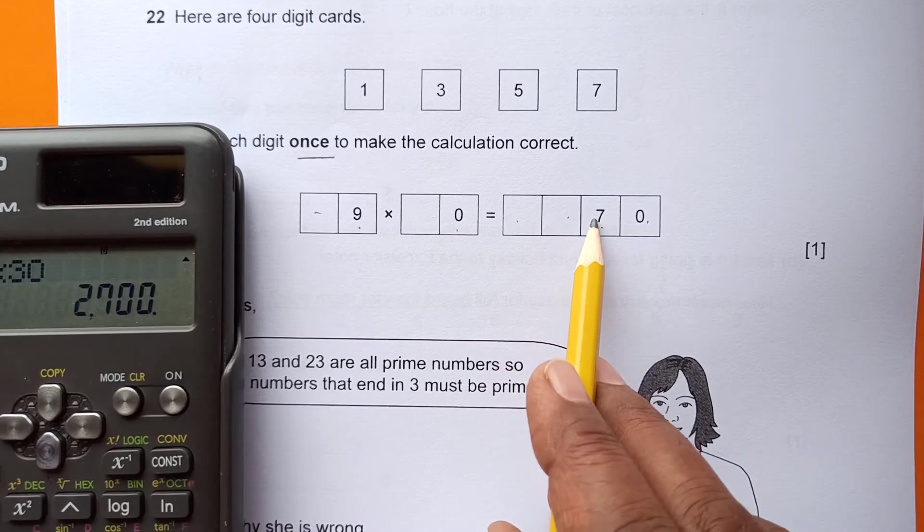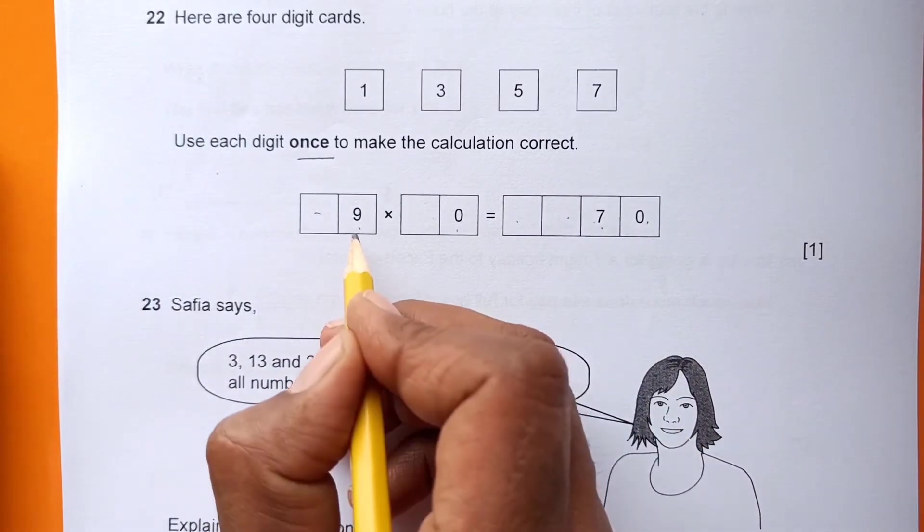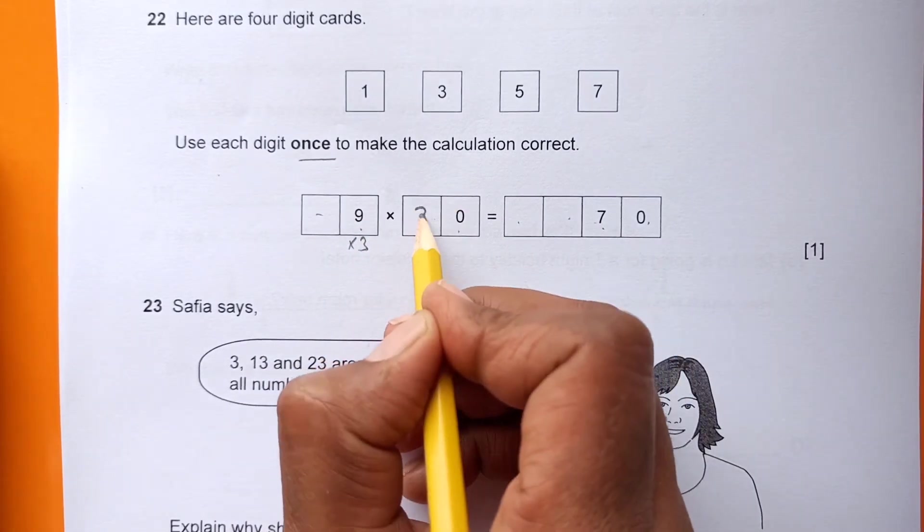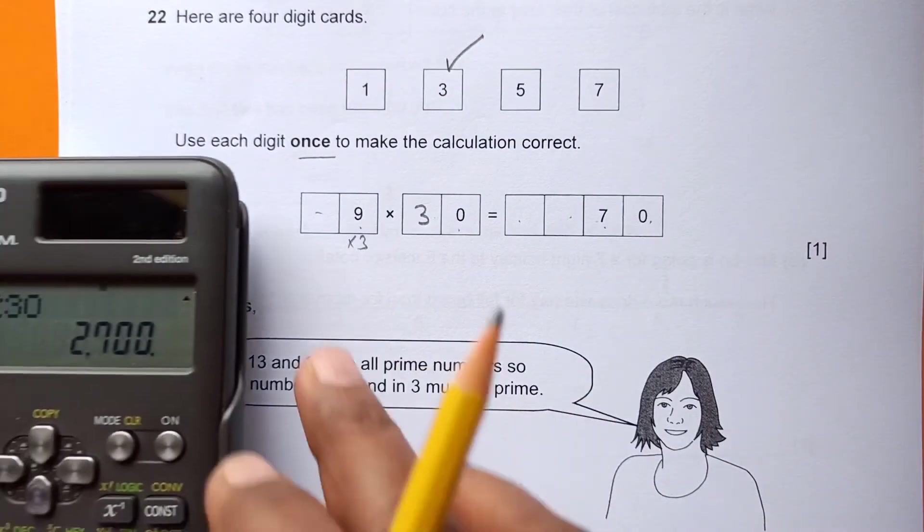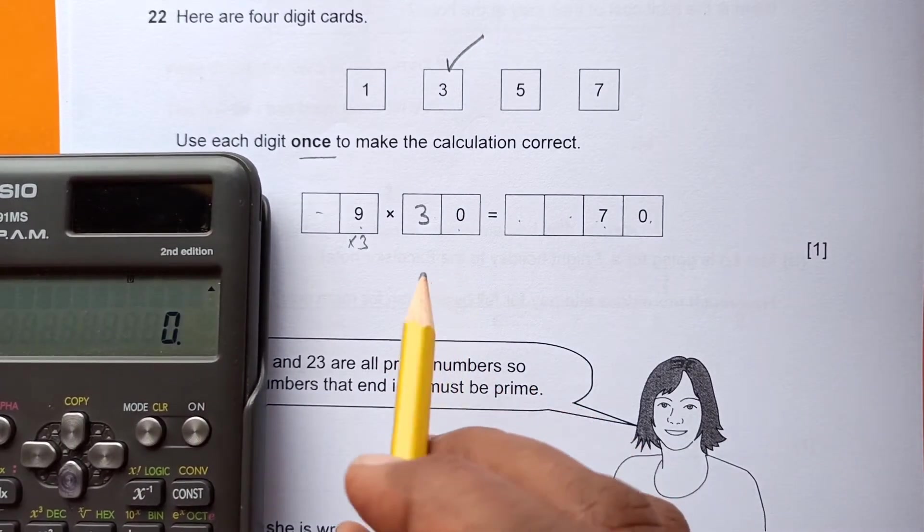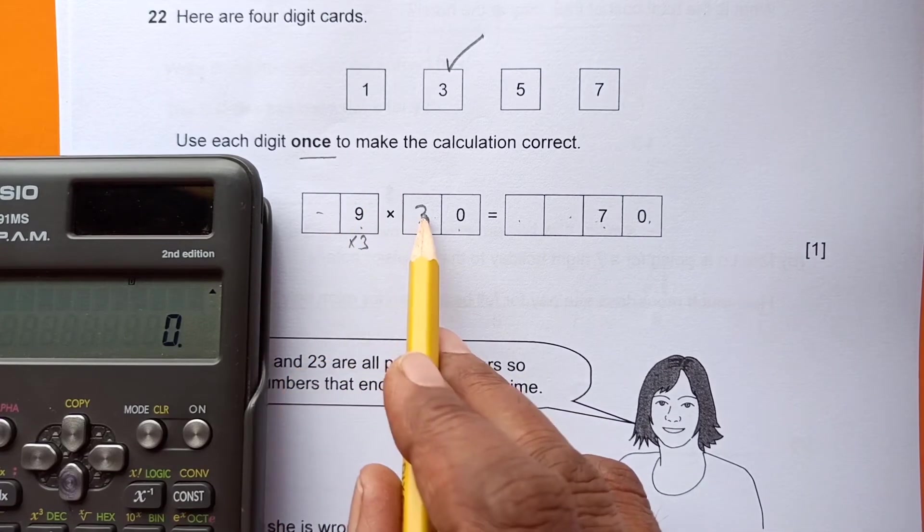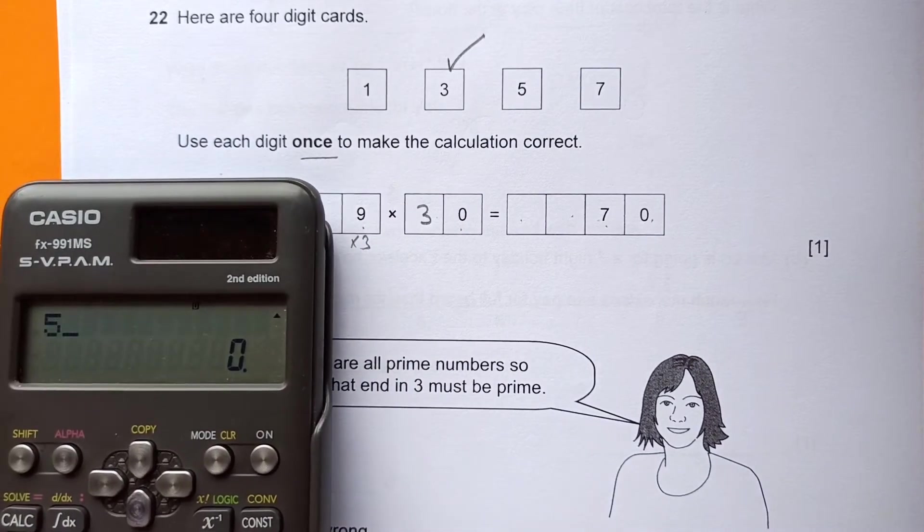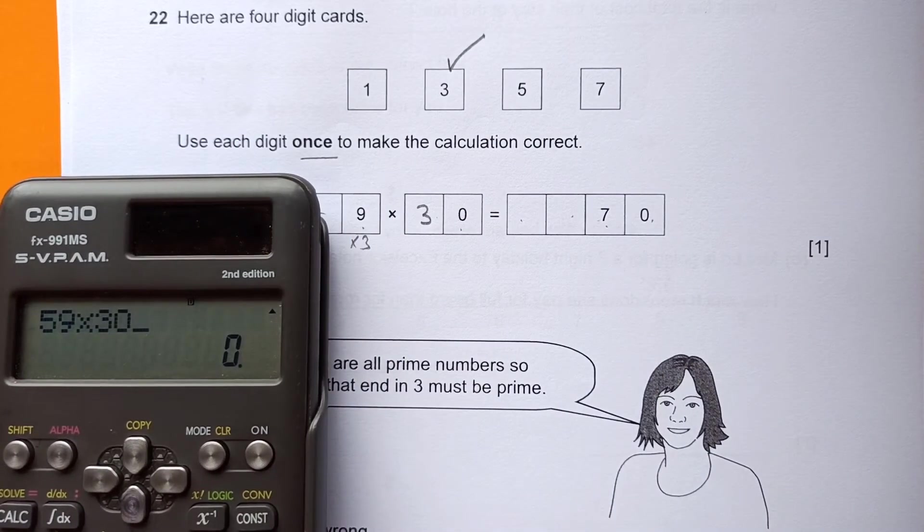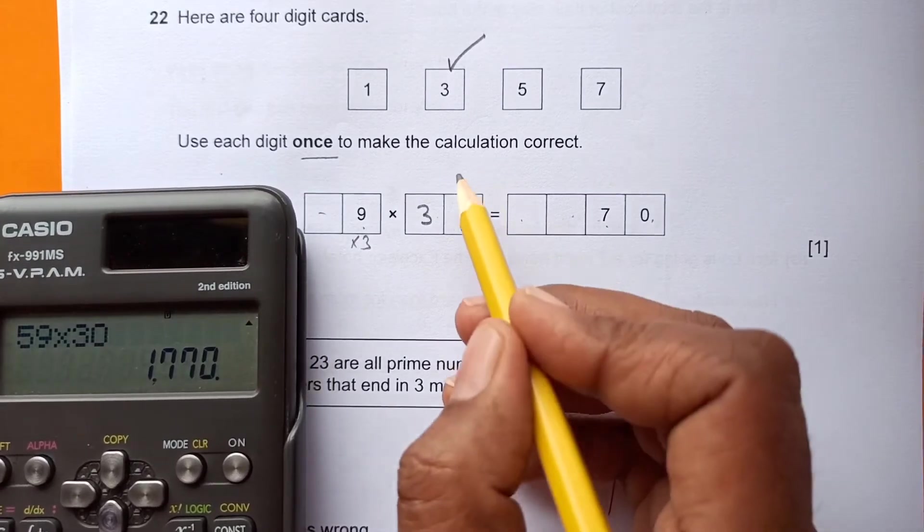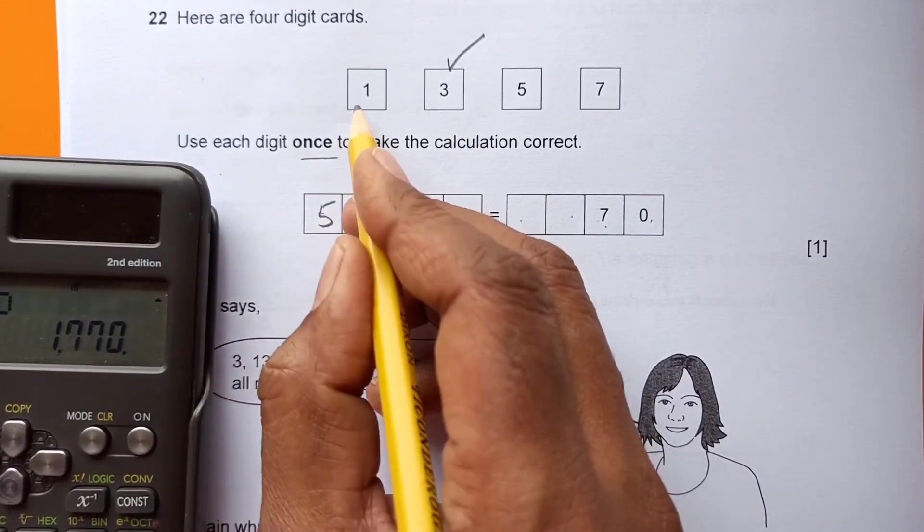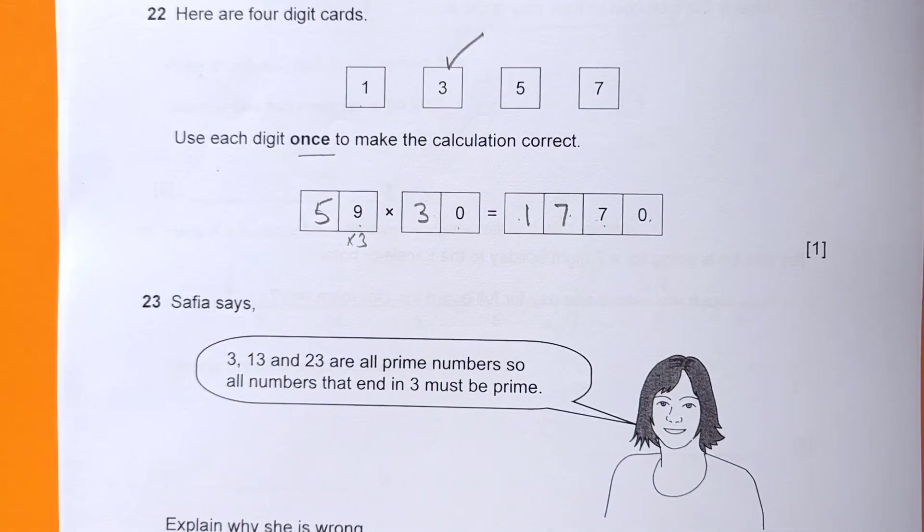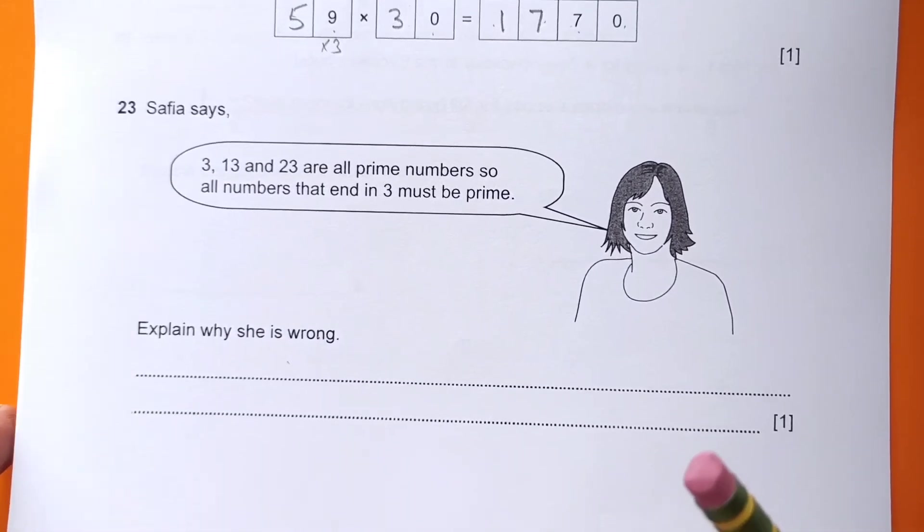We're looking for a number that gives 7 here, so 9 times 3 will give you 7 here, so we can write 3 here. Once we're done with 3, we can try other numbers. If we try 59 times 30, we get 1770. If I write 5 here, then 1 will come here, 7 will come here, so that's done.